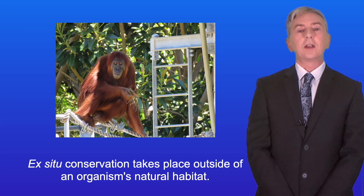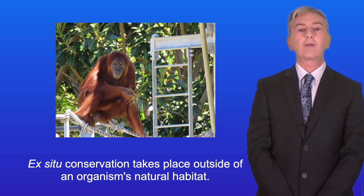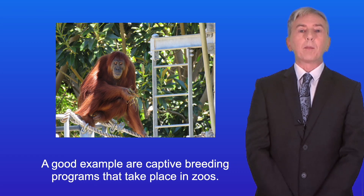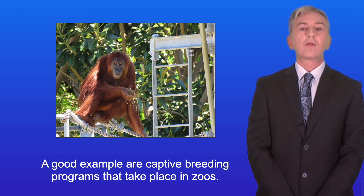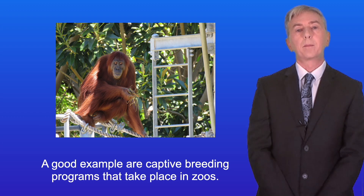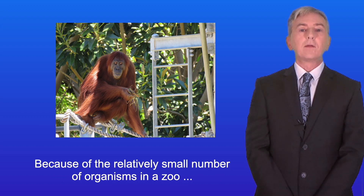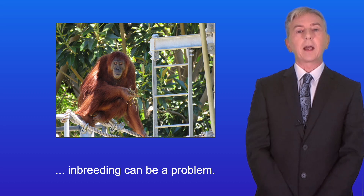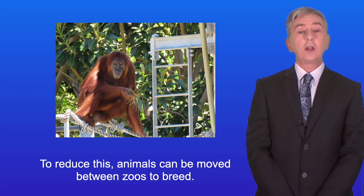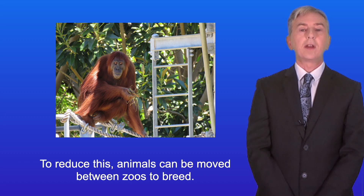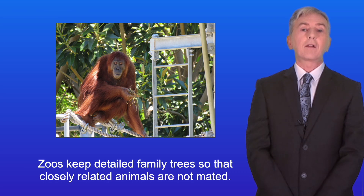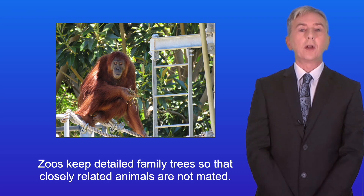Ex situ conservation takes place outside of an organism's natural habitat. A good example are captive breeding programs that take place in zoos. Because of the relatively small number of organisms in a zoo, inbreeding can be a problem. To reduce this, animals can be moved between zoos to breed, and zoos keep detailed family trees so that closely related animals are not mated.